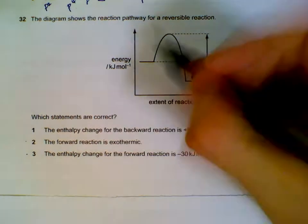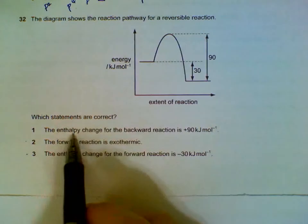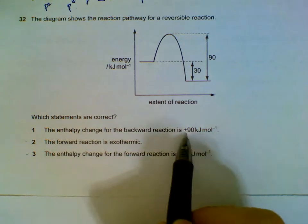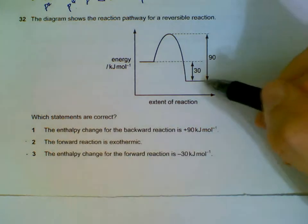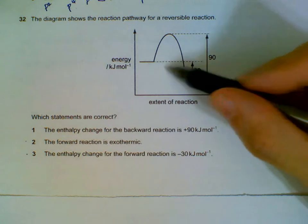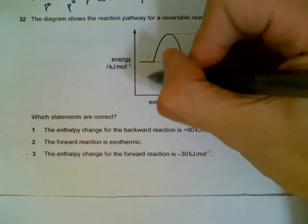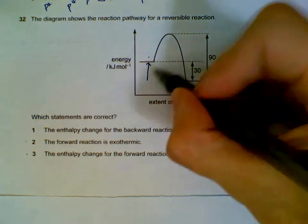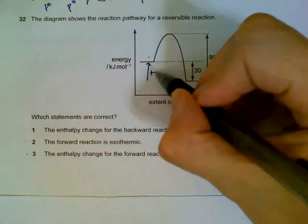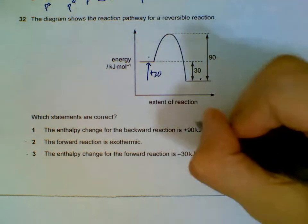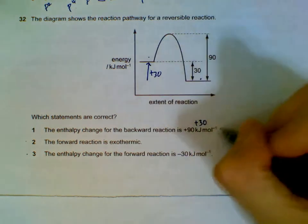The reaction pathway reversible reaction. Statement 1: enthalpy change for the backward reaction is plus 90. The backward reaction enthalpy change is the difference between this level and this level—it's only plus 30. So statement 1 is wrong.